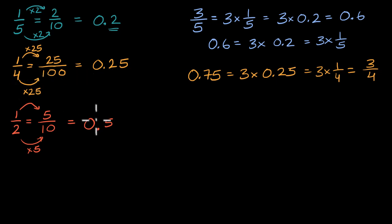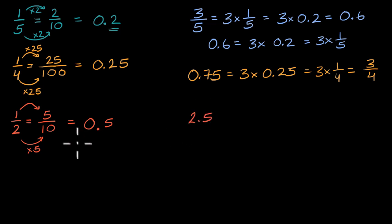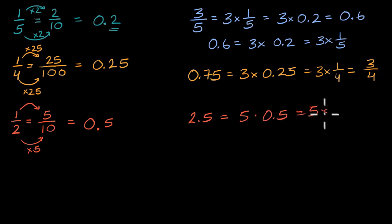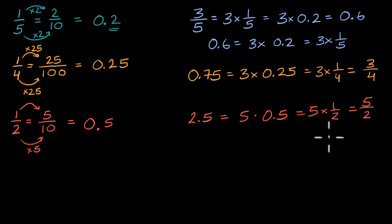Now let's represent 2.5 as a fraction. You could say: this is 5 times 0.5, and 5 times 1/2 is 5 halves. It's an improper fraction, but it's a fraction.